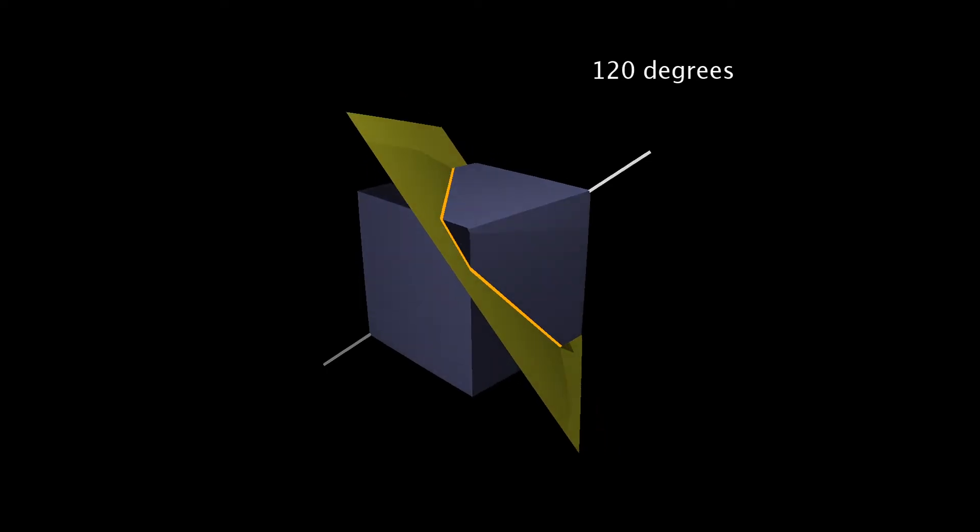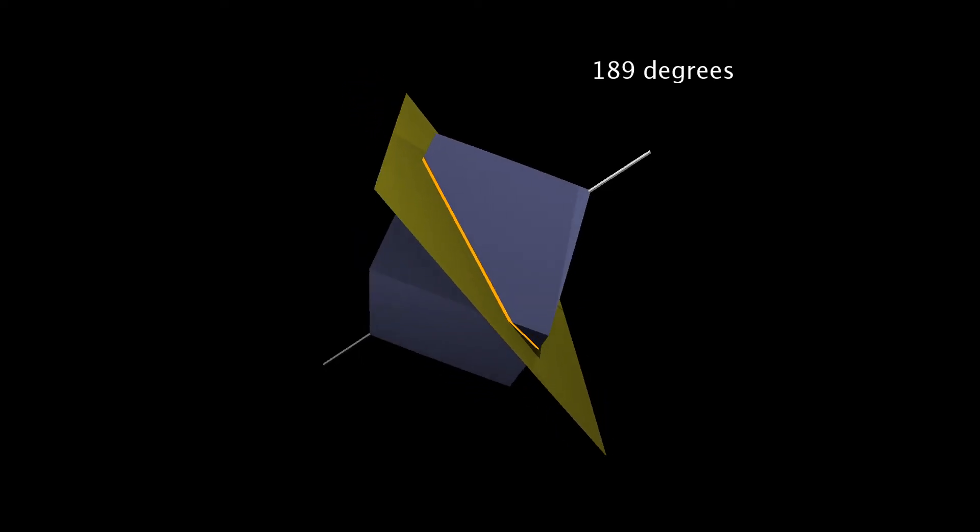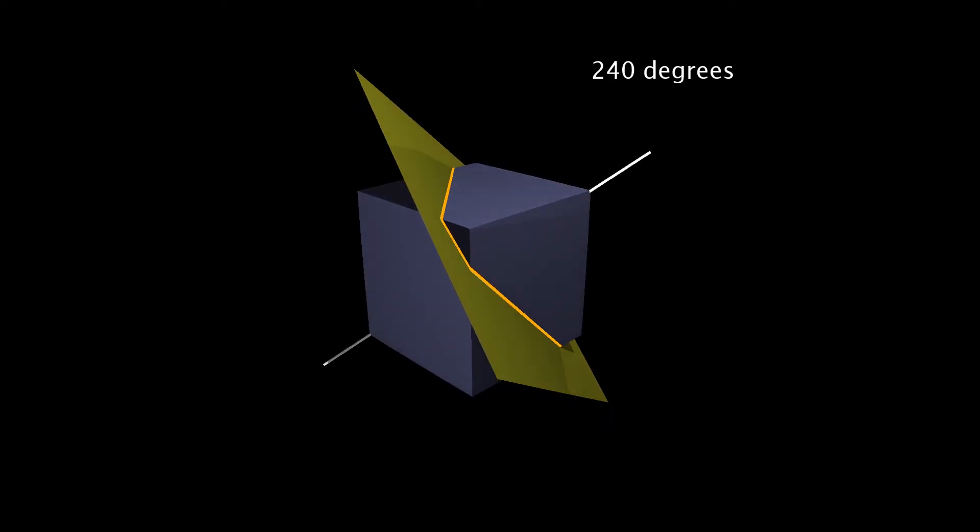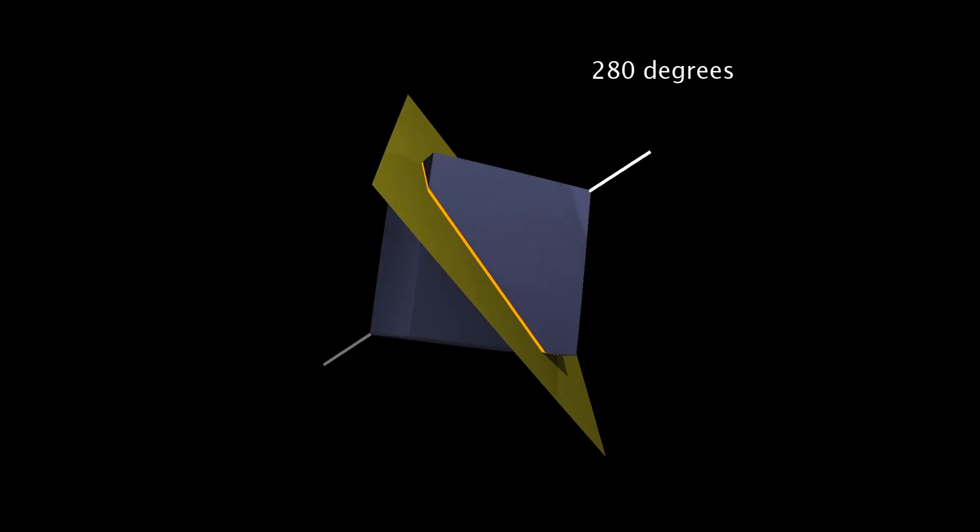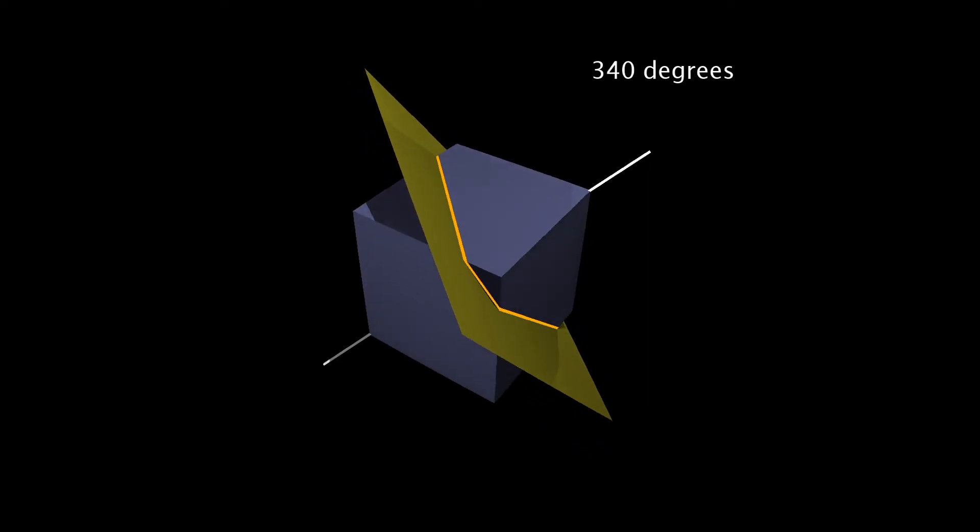And that means that the cross-section has to be invariant under these rotations. Now, multiples of 120 degrees is exactly the same as the rotation group preserving the triangle.